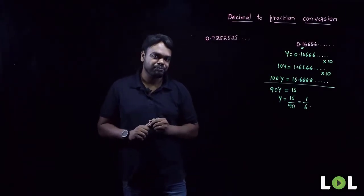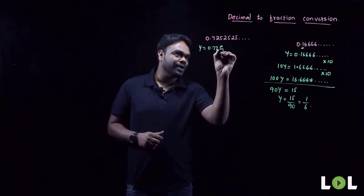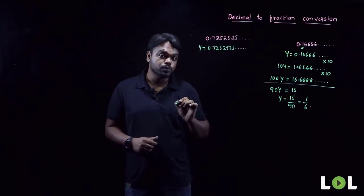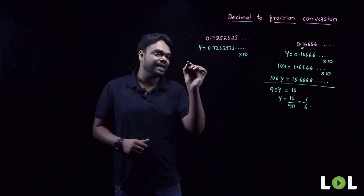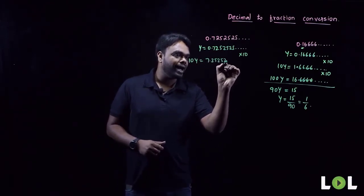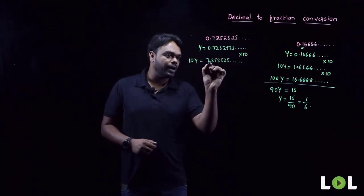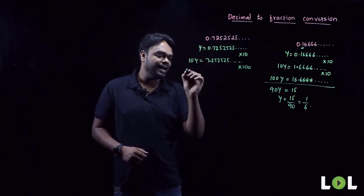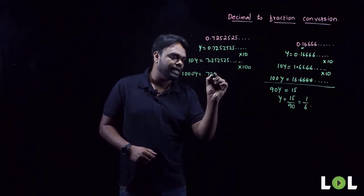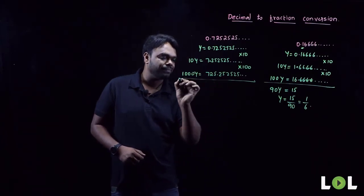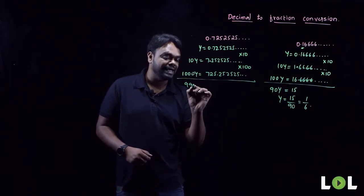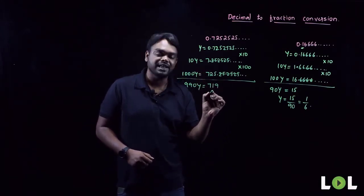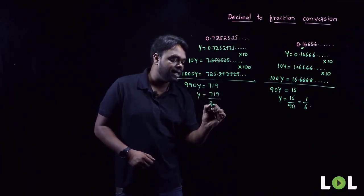Let y = 0.7252525 and so on. Is there impurity? Yes — that is 7. First separate the 7 by multiplying by 10: 10y = 7.252525. Now after the decimal point it is a pure recurring decimal. Two digits are recurring, so multiply by 100: 1000y = 725.252525. Subtract 10y from 1000y: 990y = 725 − 7 = 719. So y = 719/990.